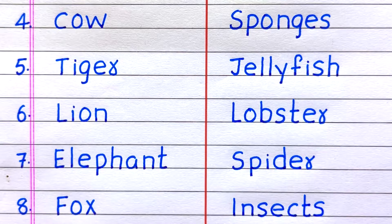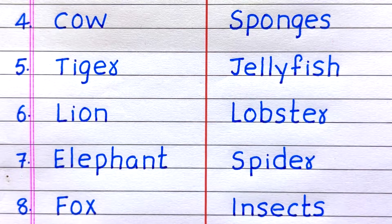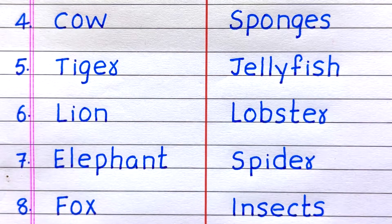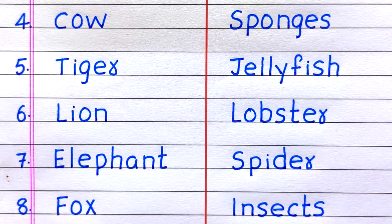Fourth example of a vertebrate animal is cow. Fifth, tiger. Sixth, lion. Seventh, elephant. Eighth, fox.